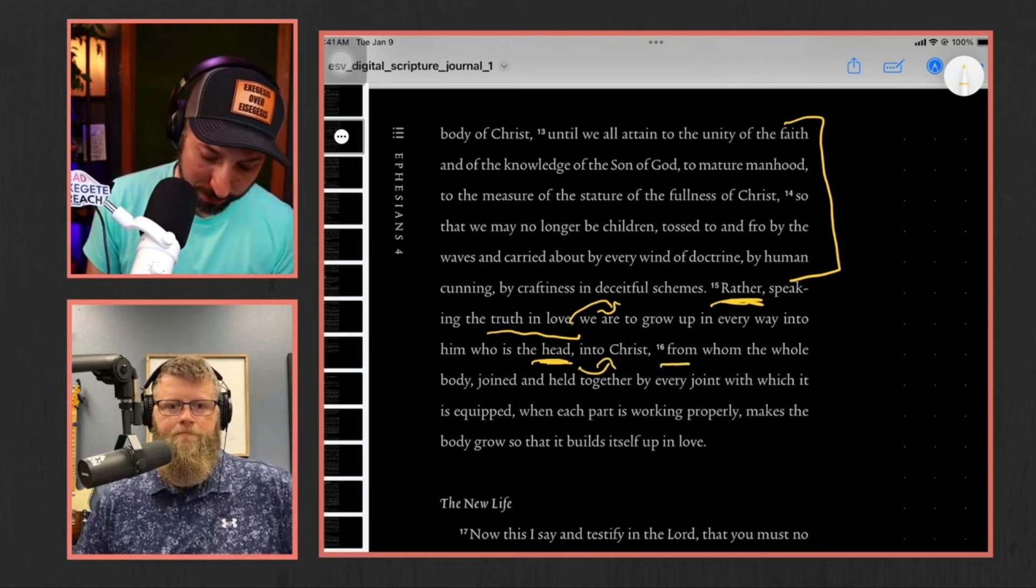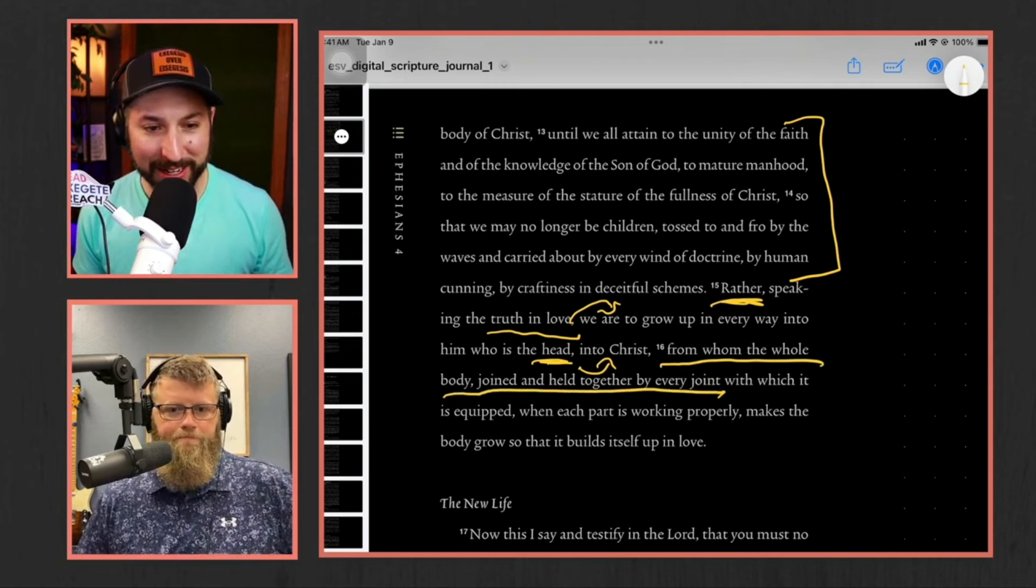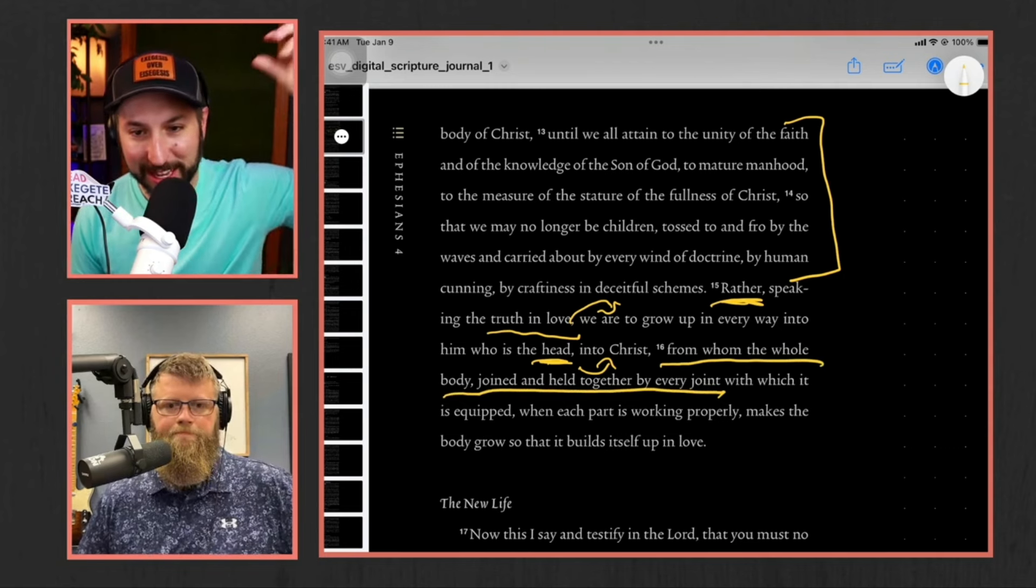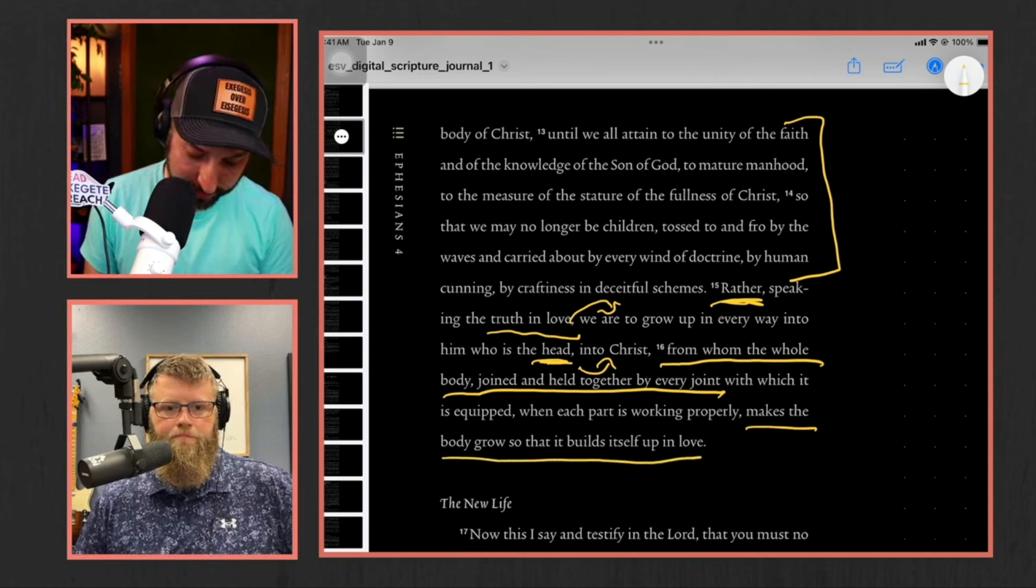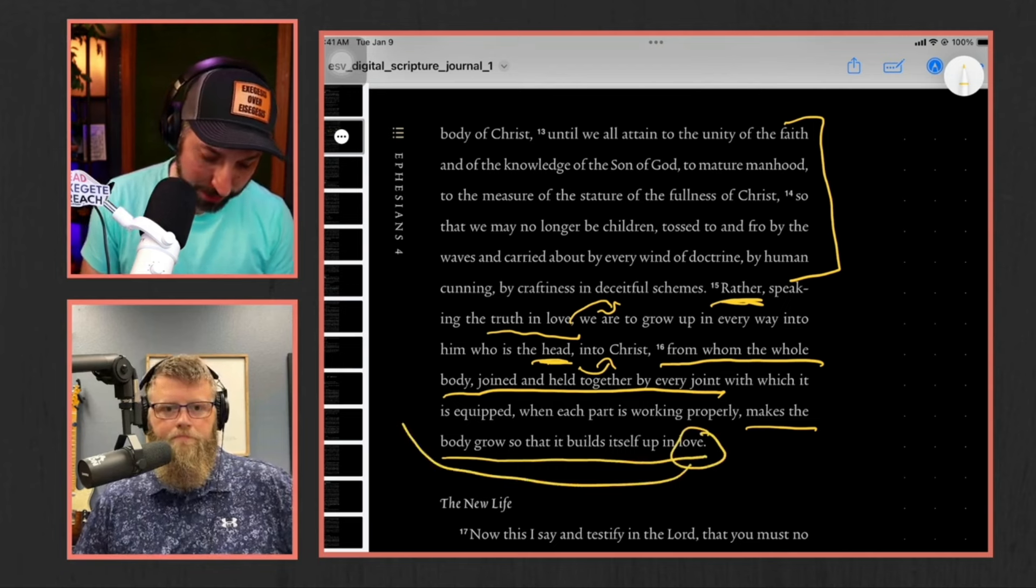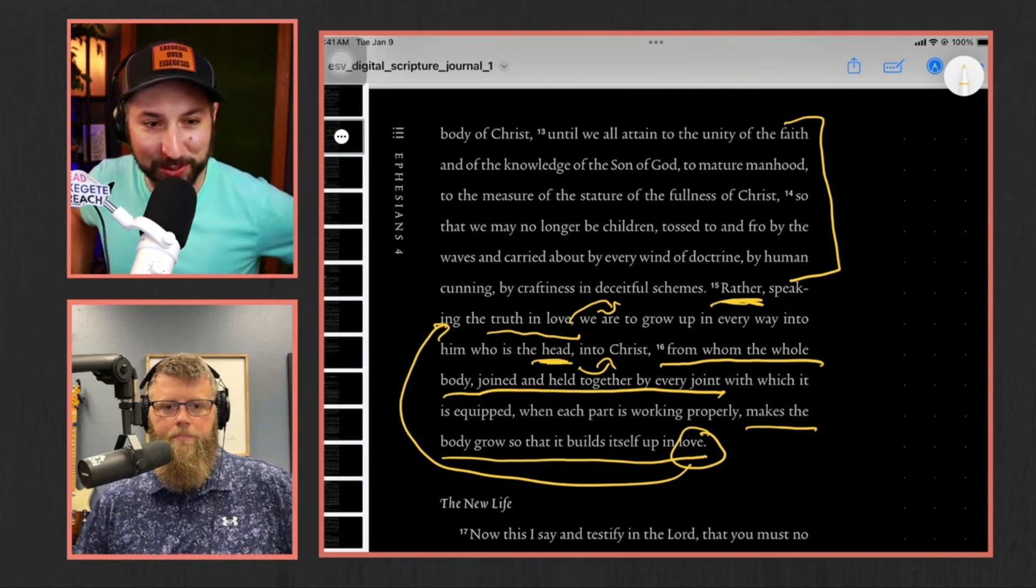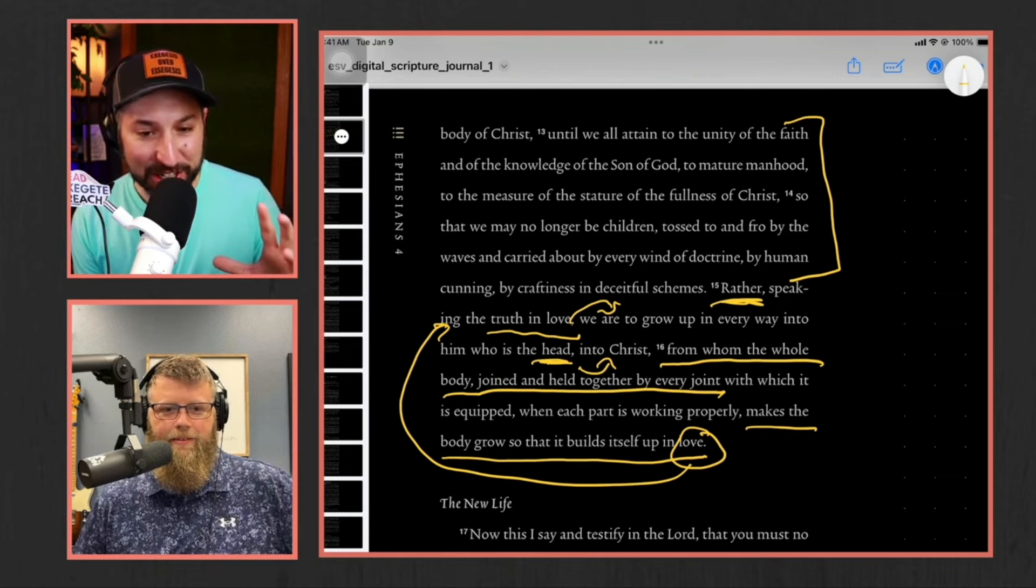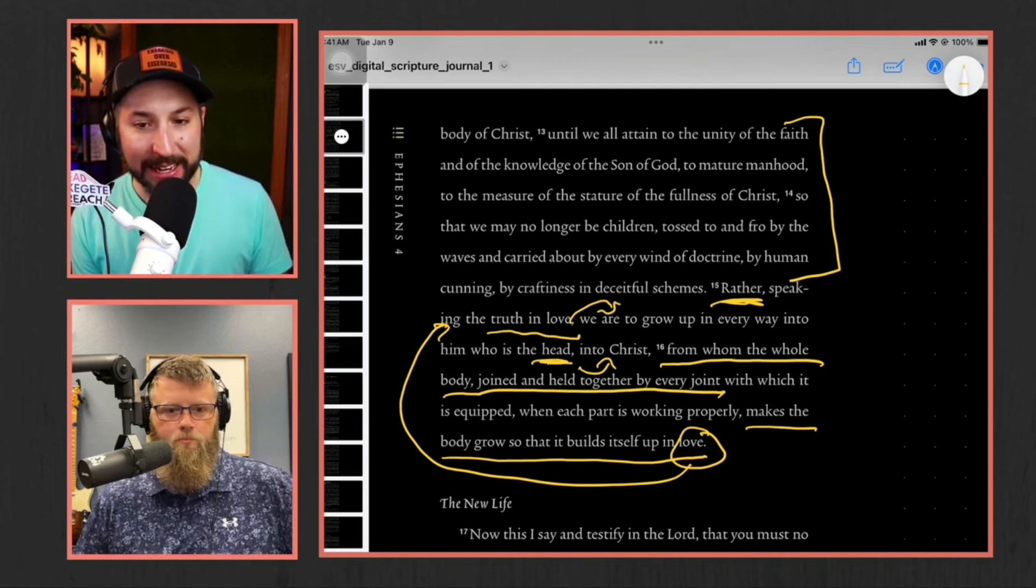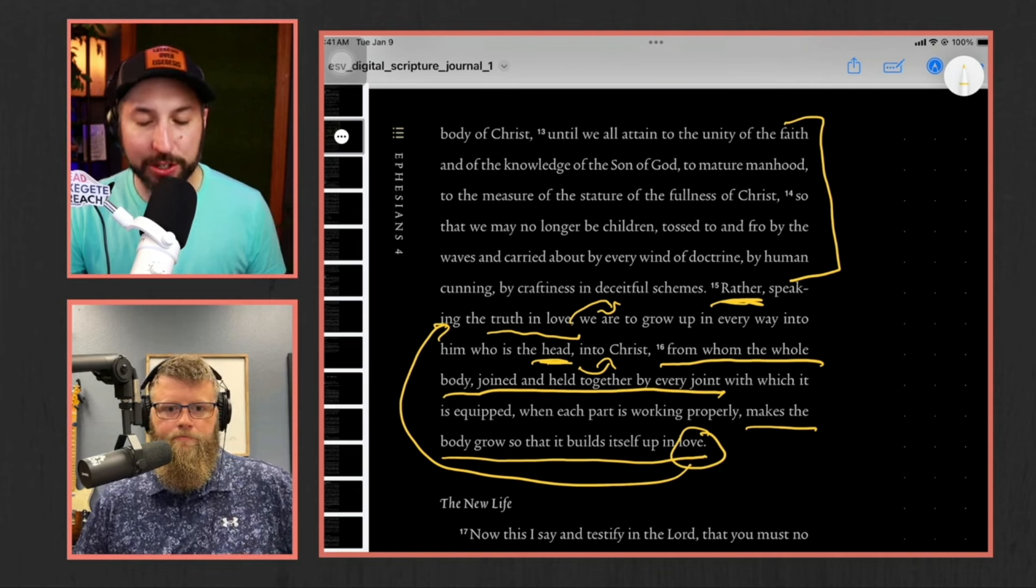So he's talked about everything before - rather speaking the truth and love, we are to grow up in every way to him who is the head. So he's making a point here again with that body analogy, the head is Christ. And then what happens? Well from Christ, the whole body joined together is held in every joint. So he's making a huge point here. We're speaking truth and love, Christ is the head, we are the body. And what's the purpose of that? Well making the body grow, so it builds itself up in love. Well we've already talked about the love. We're talking about truth and love. Like there's these, again I'm doing this on the fly, so excuse my exegetical work here. But the idea is that there is a connection that's happening just in this verse.